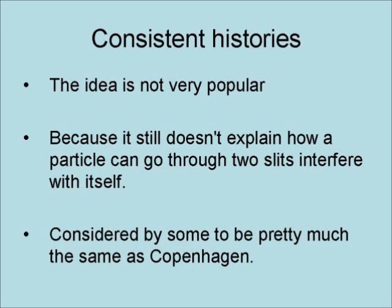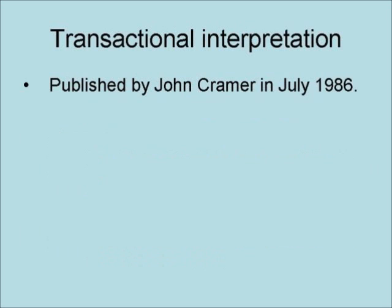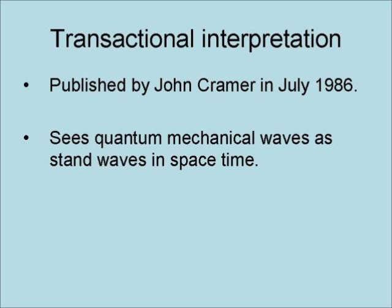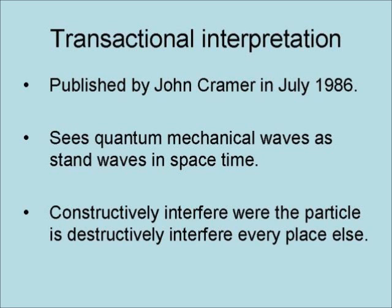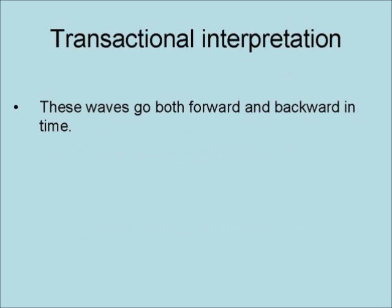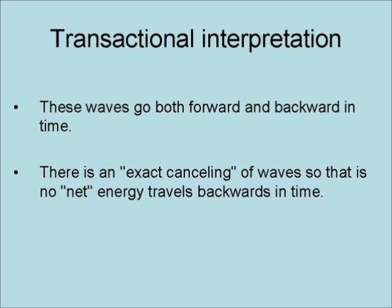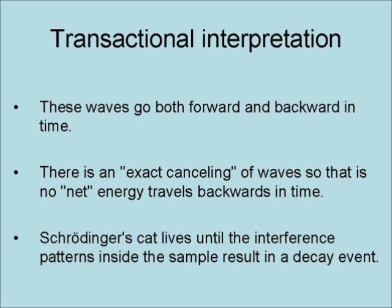Also, it is considered by some to be pretty much the same as the Copenhagen interpretation. The transactional interpretation of quantum mechanics was published by John Cramer in July of 1986. It sees quantum mechanical waves as standing waves in space-time that constructively interfere where the particle is and destructively interfere everywhere else. These waves go both forward and backward in time. However, there is an exact canceling of waves so that no net energy travels backward in time. In this case, Schrödinger's cat lives until the interference patterns inside the sample result in a decay event.